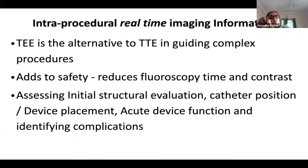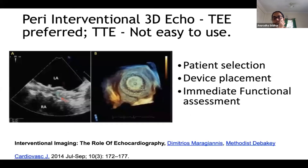Intraprocedural real-time imaging information is very much required for complex interventions — this includes initial structural evaluation, knowing catheter position, guiding device placement, checking acute device function, and identifying complications. For this, trans esophageal echo is the best. Trans thoracic echo can still be used for intraprocedural real-time imaging and is used comfortably for VSD device closures at our institute, though it is a little more cumbersome.